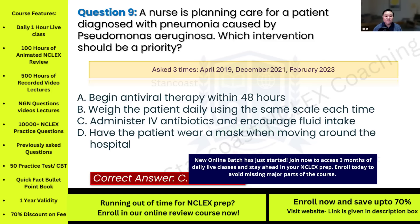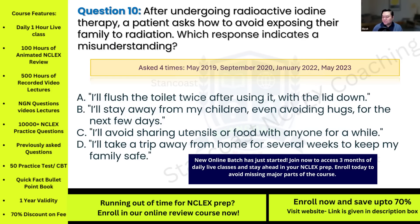Question ten: After undergoing radioactive iodine therapy, a patient asks how to avoid exposing their family to radiation. Which response indicates a misunderstanding? This question has been asked four times. Options: A) I'll flush the toilet twice after using it with the lid down; B) I'll stay away from my children, even avoiding hugs for the next few days; C) I'll avoid sharing utensils or food with anyone for a while; D) I'll take a trip away from home for several weeks to keep my family safe.